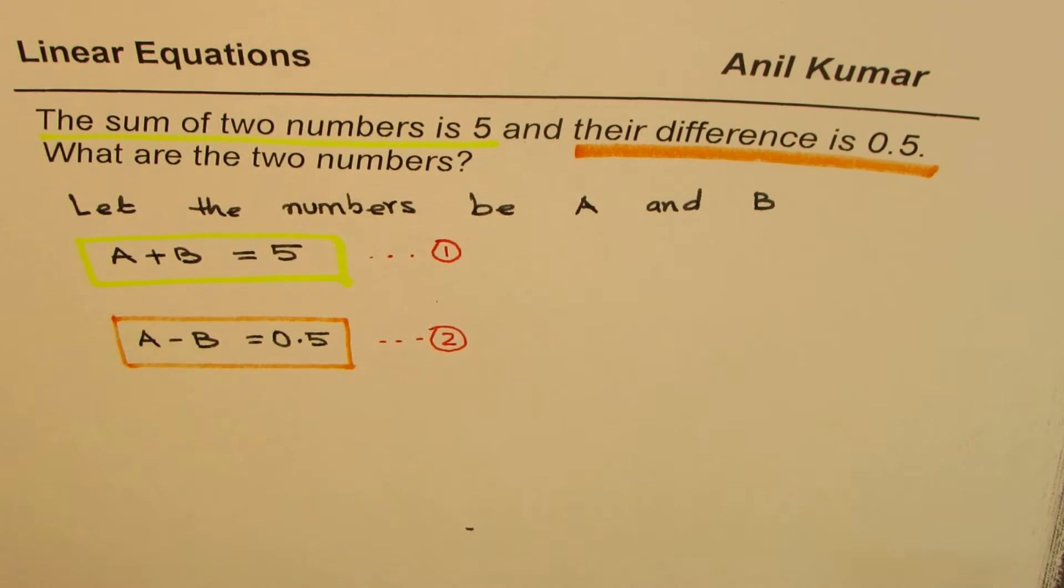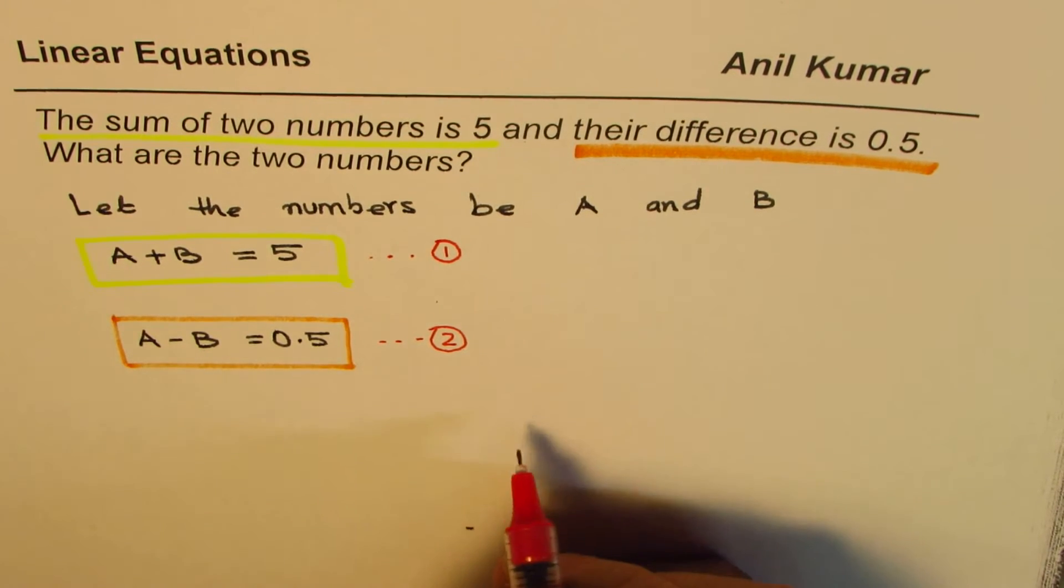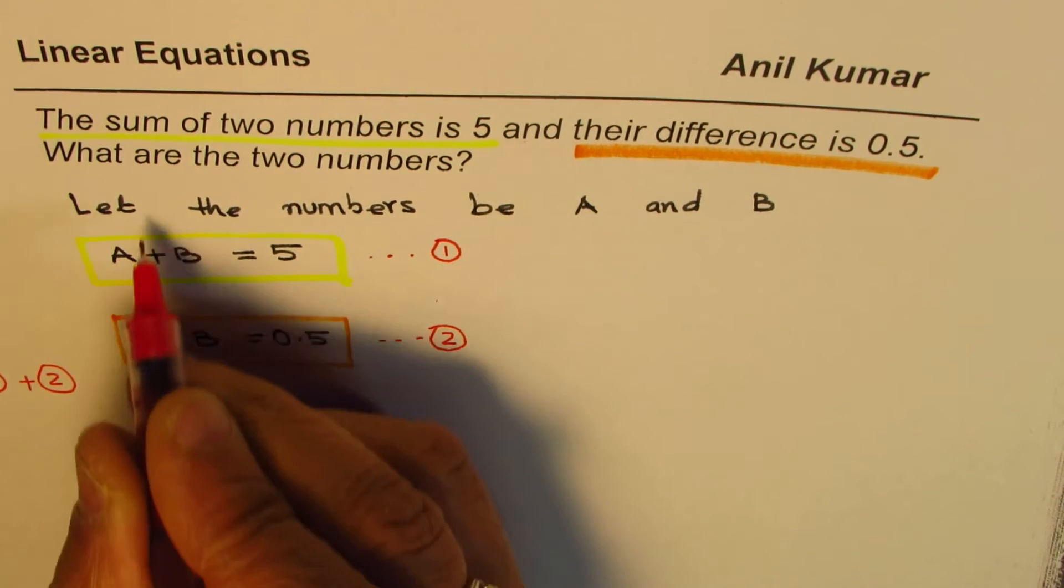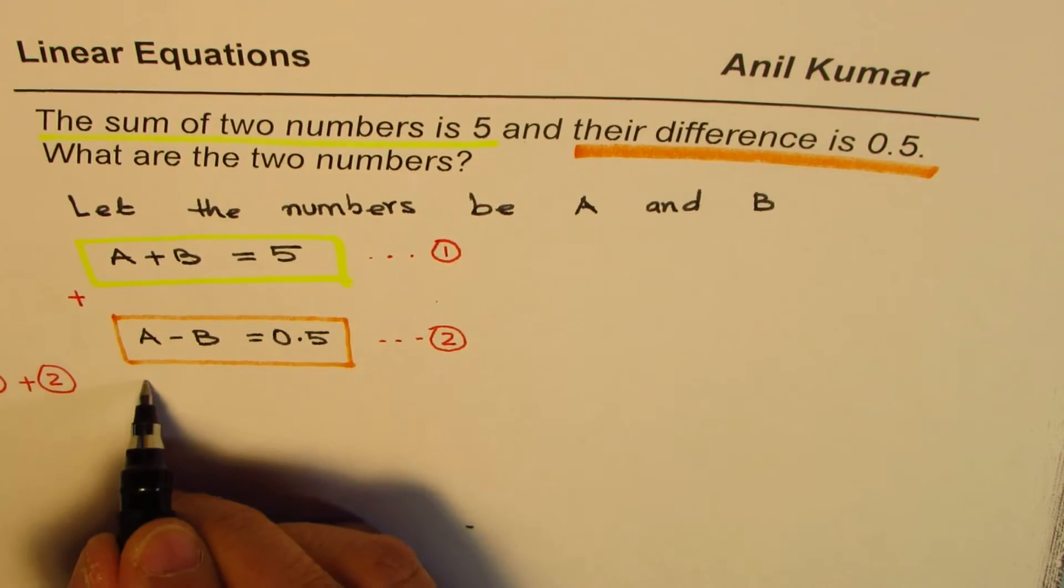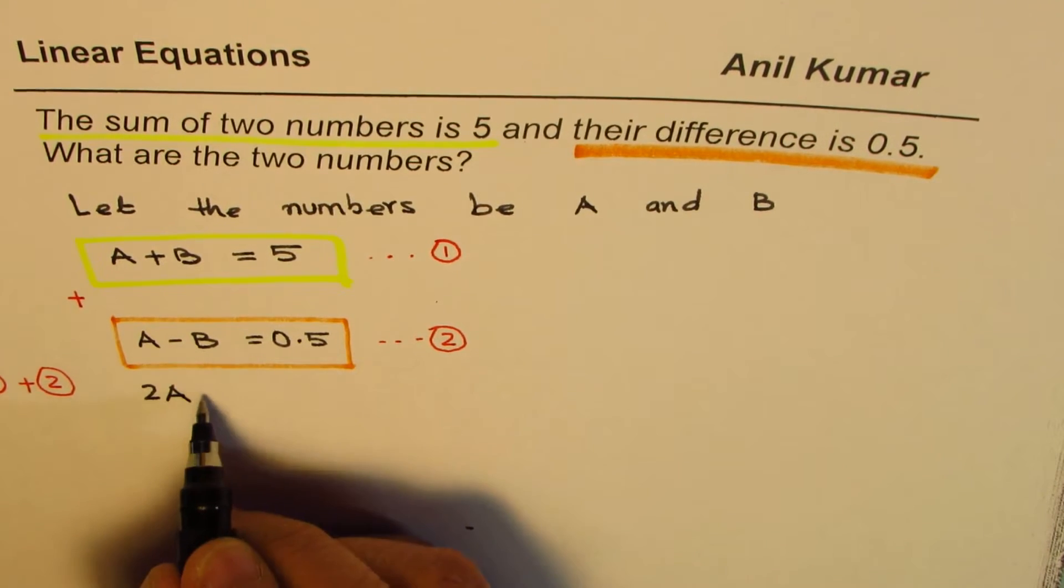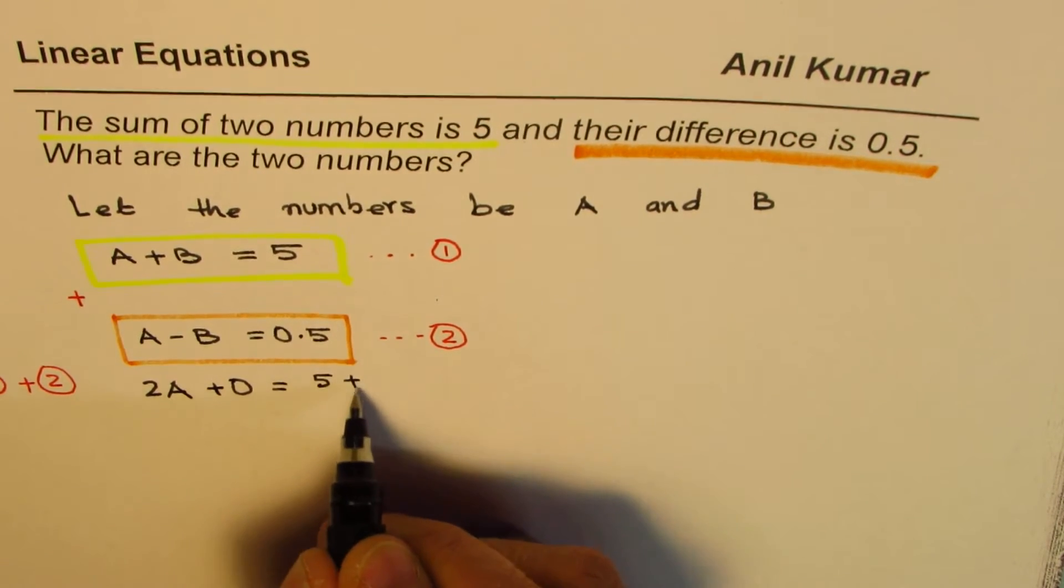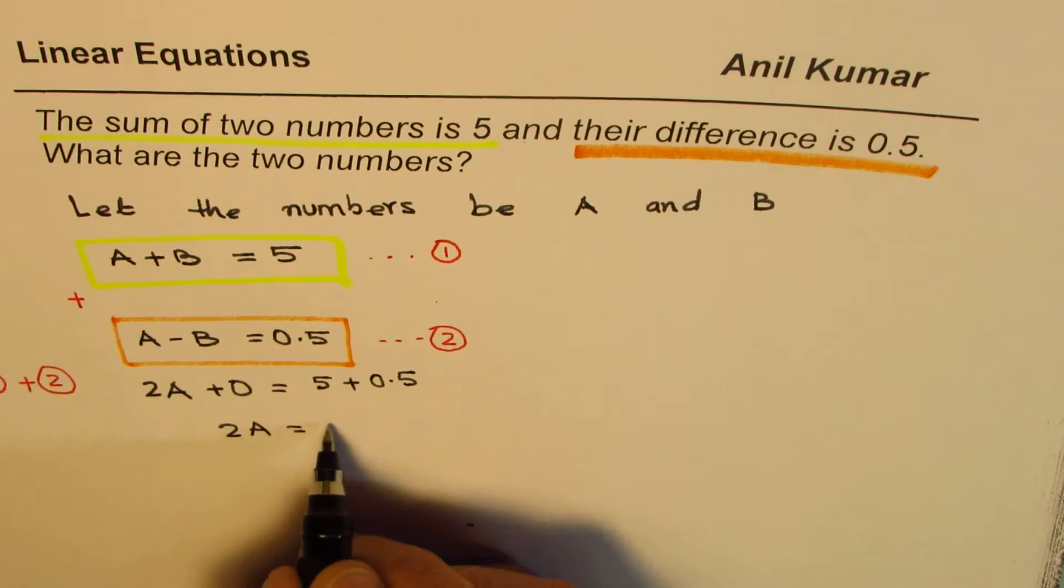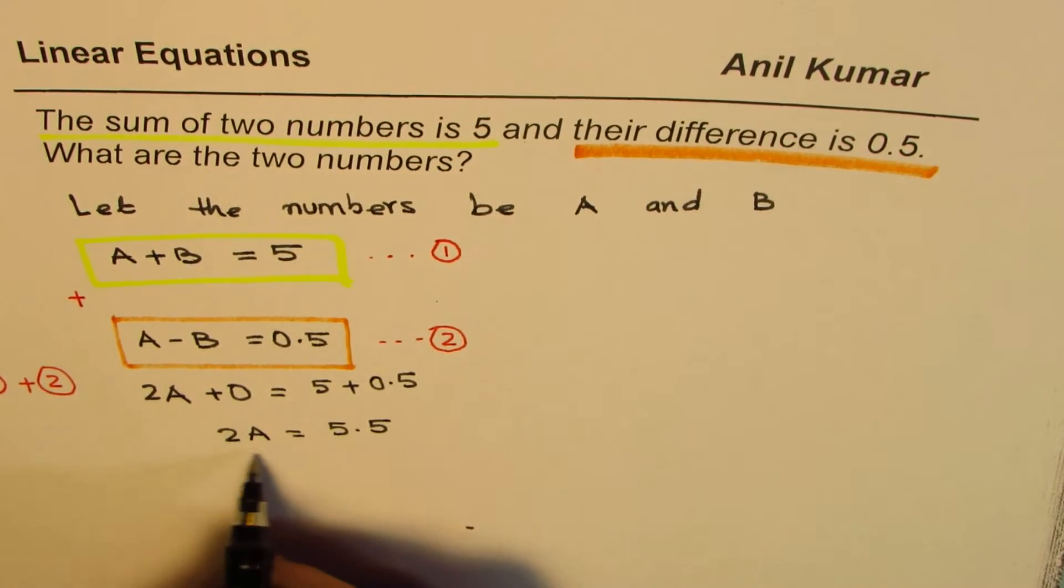So we can actually add these two equations. So if I add these two equations, I am doing equation 1 plus equation 2, basically adding them up. So if I add A and A, I get 2A. If I add B with minus B, I get 0. And on the right side, 5 plus 0.5 is what I get. So from here, I can write 2A equals 5.5. And if I divide by 2, I get the value of A. So I divide both sides by 2.